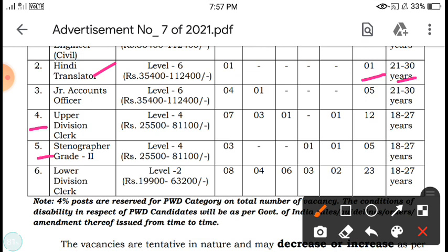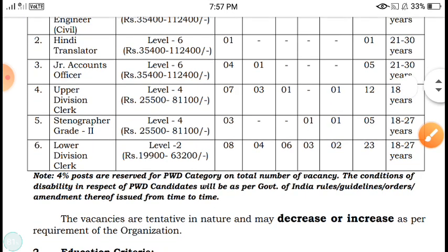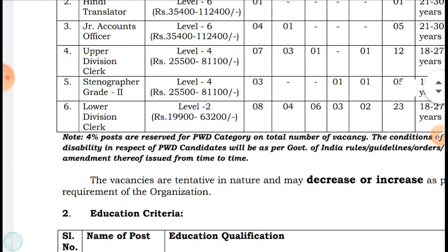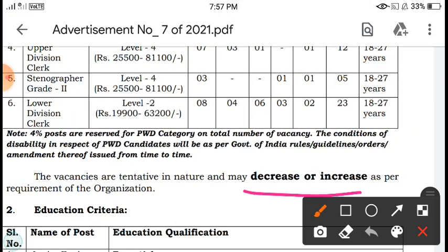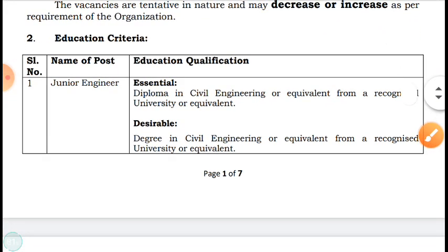There is also Stenographer Grade 2 and Lower Division Clerk. In total, there are around 23 vacancies in the lower divisional clerk category. Note that the vacancies are tentative — they may decrease or increase depending on the requirement.